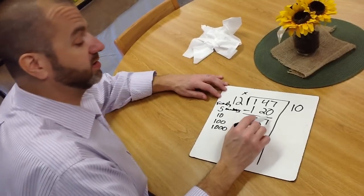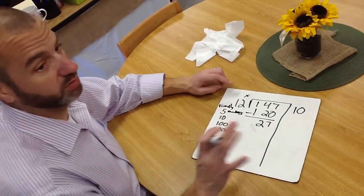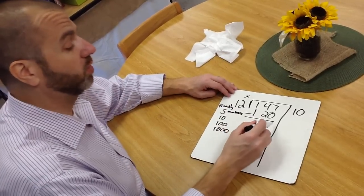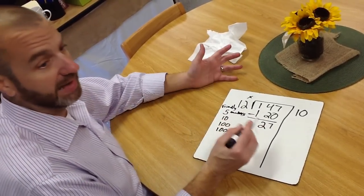What we're teaching kids is 27 cannot be the remainder because it's greater than 12, which really means we can make more groups of 12 out of that 27. The question is, how many?